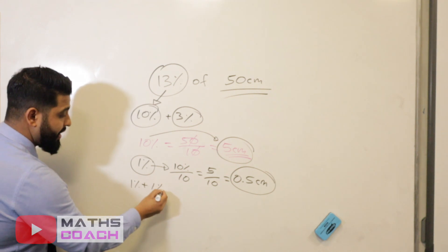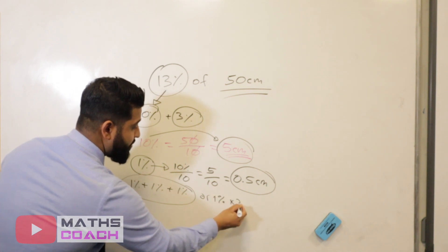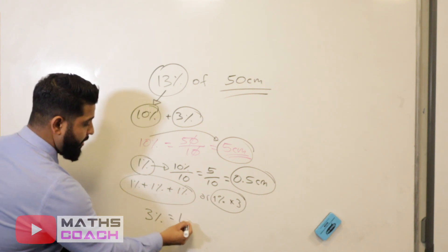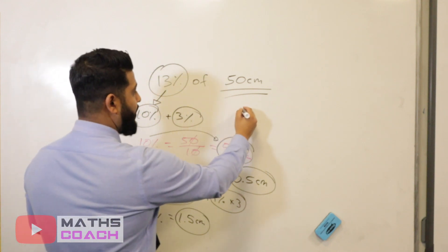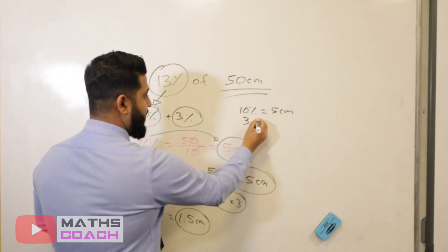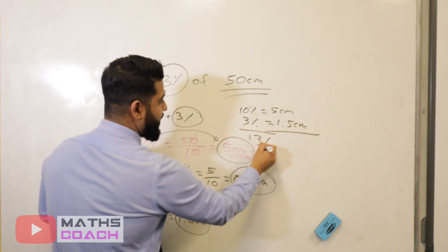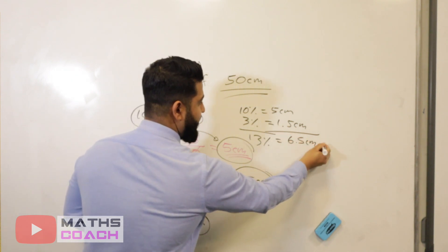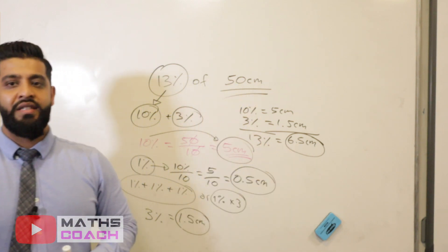That is 1%. But we need 3%. So we will multiply or add 3 lots of 1%. So either we do 1% plus 1% plus 1% or we will just do 1% times by 3. Either way, 3% is equal to 1.5 centimeters. We know our 10% amount is 5 centimeters. We know our 3% amount is 1.5 centimeters. And to find 13%, we will simply add that up. So 5 plus 1.5 is 6.5 centimeters. So 13% of 50 centimeters is 6.5 centimeters.